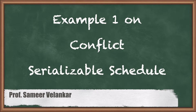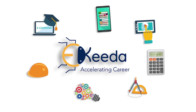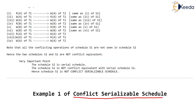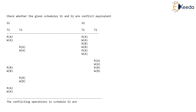Hello dear students, I am Samir Velankar and let's continue our discussion on conflict serializable schedule. In the previous video, the problem we solved was we were given two schedules S1 and S2, both containing two transactions T1 and T2. We were asked: are these two schedules conflict equivalent? And we saw that these two schedules were not conflict equivalent.